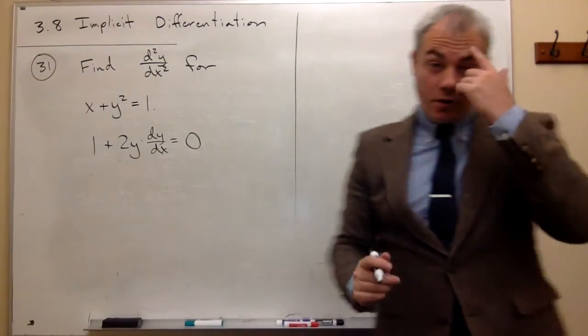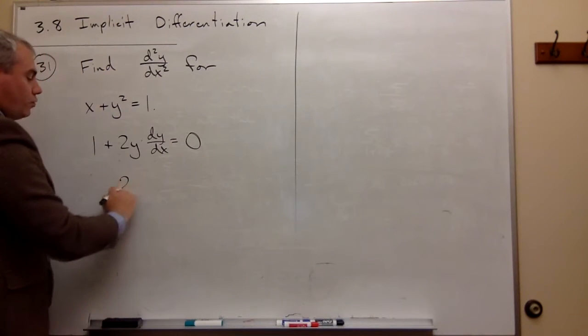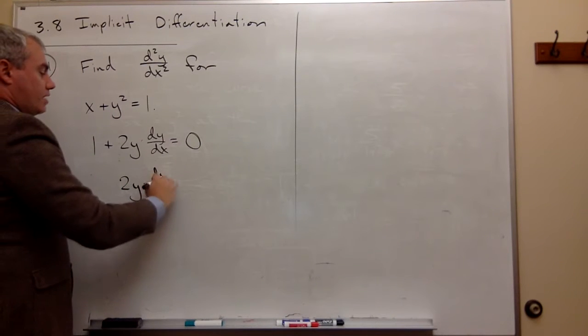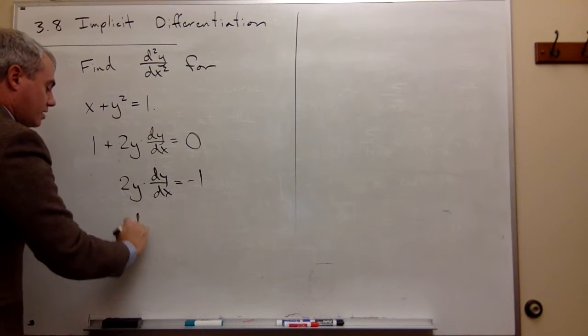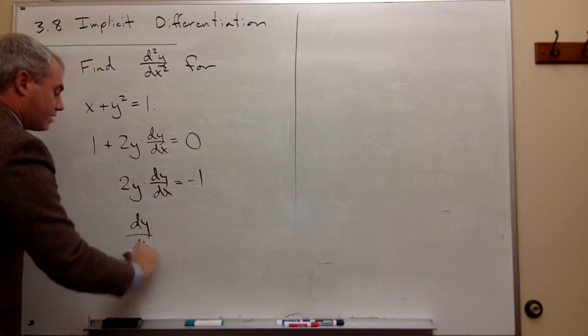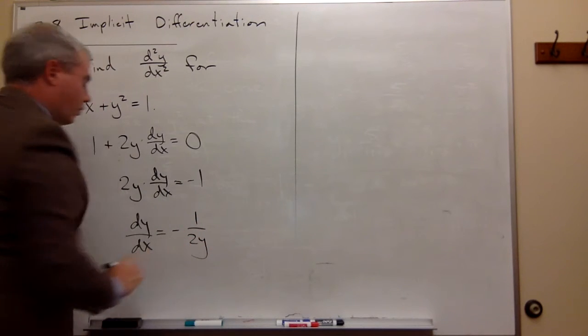Okay, so now I can solve this thing for dy dx. And I get that 2y times dy dx is negative 1. And that dy over dx is equal to negative 1 over 2y.